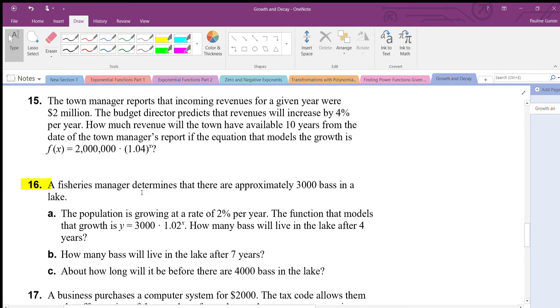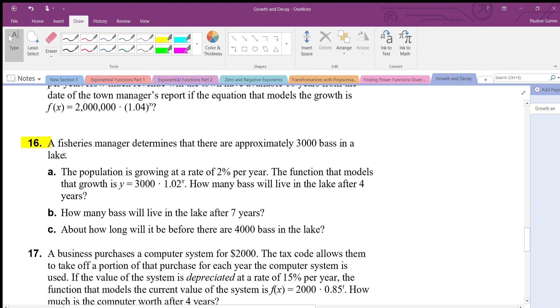A fisheries manager determines there are approximately three thousand bass in a lake. That's our initial amount, we start off with three thousand bass in a lake. The population is growing at a rate of two percent per year. That's going to be a growth of two percent, and our initial amount, three thousand bass.